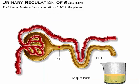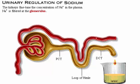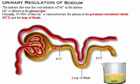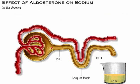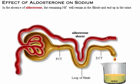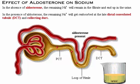One of the functions of the kidney is to fine-tune the concentration of sodium in the plasma. Sodium is filtered at the glomerulus — the higher the glomerular filtration rate, the more sodium is filtered out of the plasma. Normally, 85–90% of that sodium is reabsorbed into the plasma at the proximal convoluted tubule and loop of Henle. In the absence of aldosterone, the remaining sodium will remain in the filtrate and end up in the urine. In the presence of aldosterone, the remaining sodium will get reabsorbed at the late distal convoluted tubule and collecting duct.